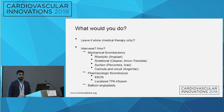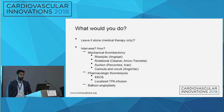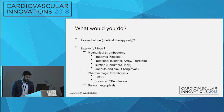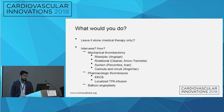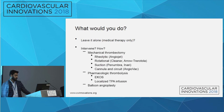In terms of how to intervene, there are several options: mechanical thrombectomy using devices like the Penumbra, pharmacologic thrombolysis with EKOS or localized TPA, balloon angioplasty, and so on. In this gentleman, medical therapy wasn't really an option because of his history of bleeding. So we decided to go after the clot with a mechanical thrombectomy device.